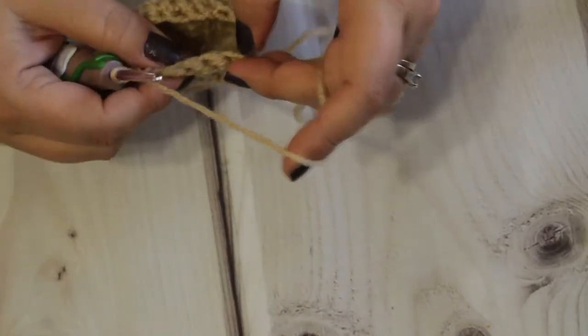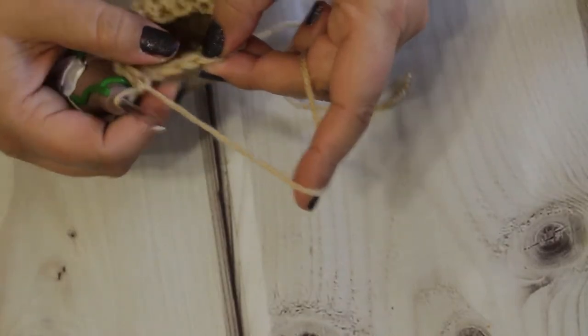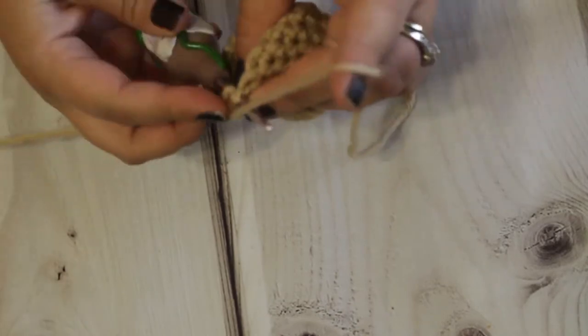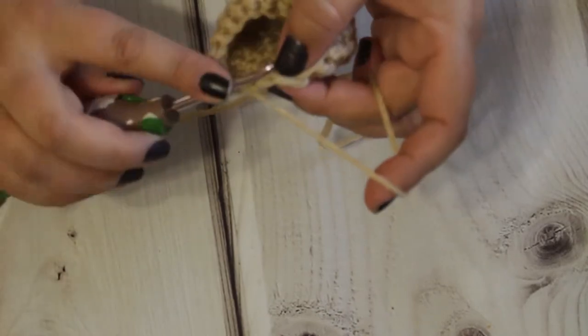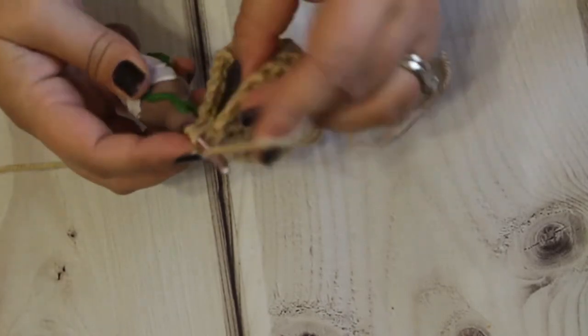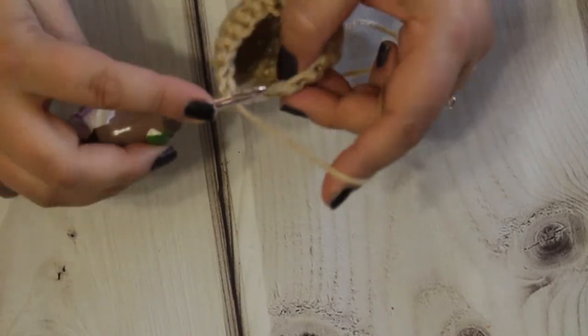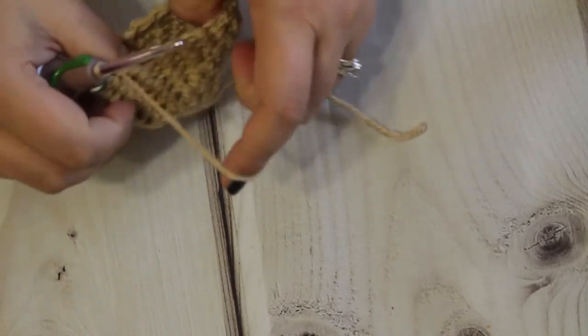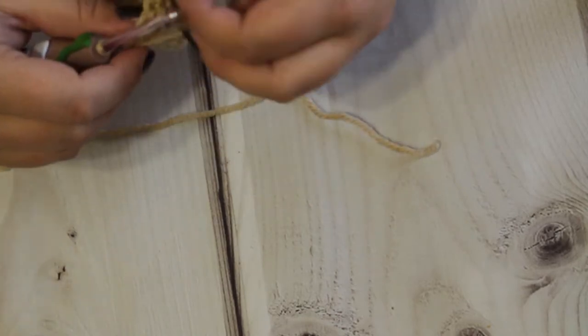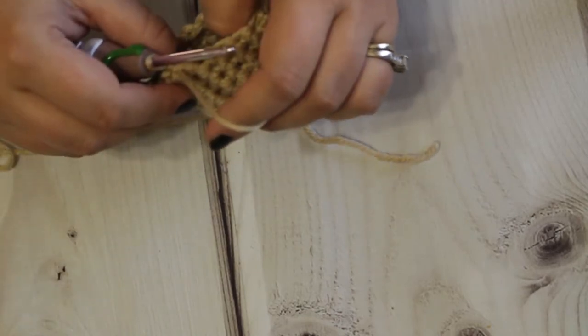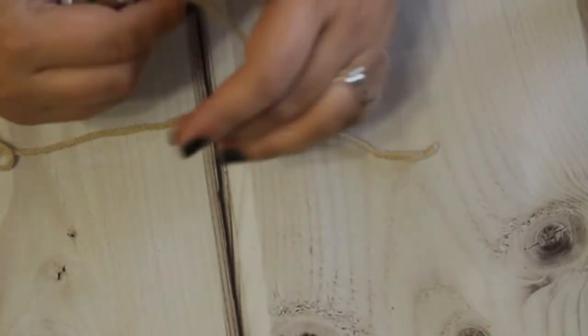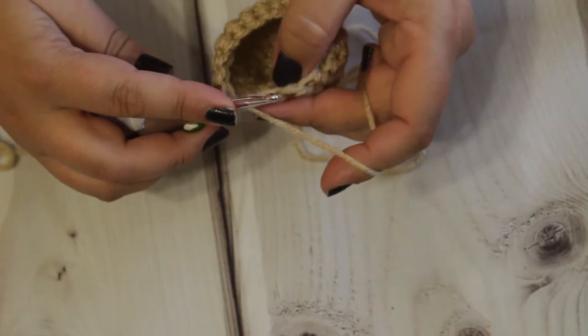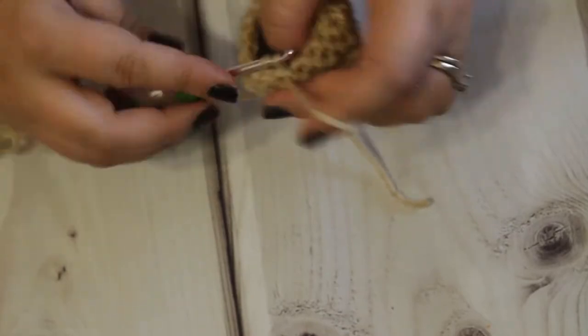So single crochet decrease, so one, two, complete your single crochet and slip stitch in two. Now rows 11 and 12 we're just going to single crochet into each stitch and slip stitch at the beginning like we've been doing throughout this whole pattern. So let's go.